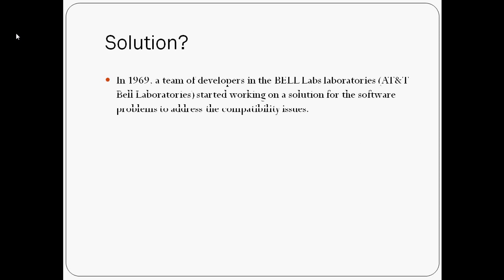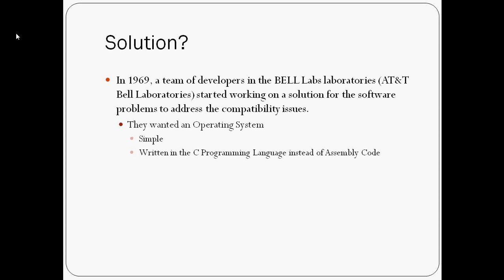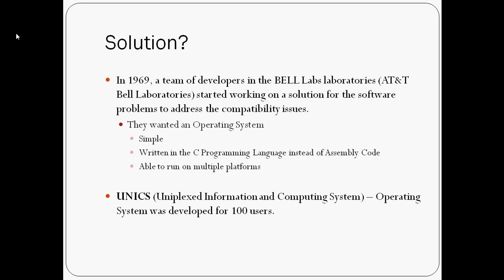So what was the solution? System makers had to come up with a solution to these problems. In 1969, a team of developers at Bell Laboratories, also known as AT&T Bell Labs, started working on a solution for the software problems — mainly to address compatibility issues. They wanted an operating system that was simple, written in C programming language rather than assembly language, and able to run on multiple hardware platforms. So they developed an operating system called UNIX, which stands for Uniplex Information and Computing System. UNIX was powerful enough to handle about a hundred users at the same time.